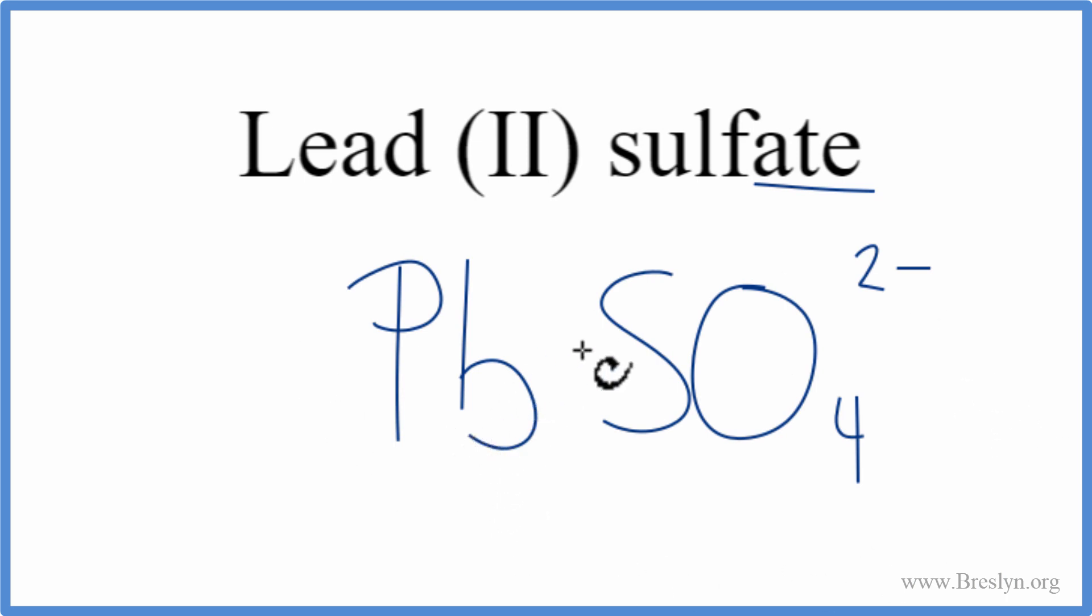With ionic compounds, when we write the formula, we need to take into account the charges. So we're lucky because lead (II), lead's a transition metal, it tells us right here, it's a two plus ionic charge.